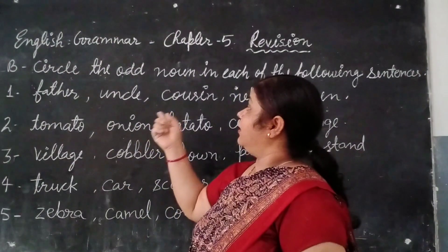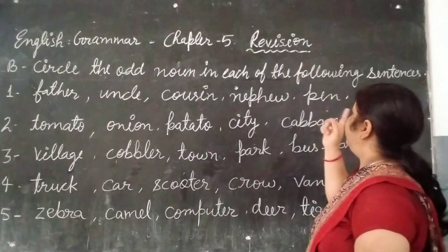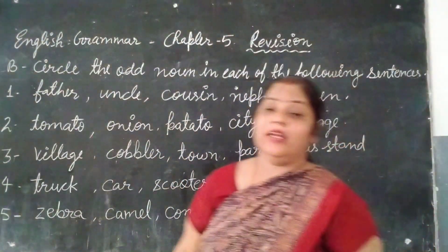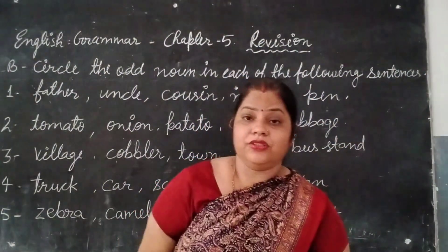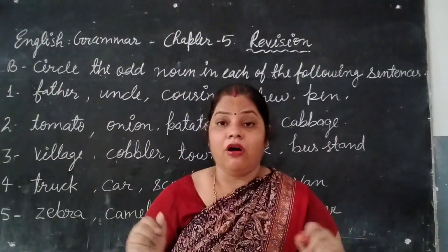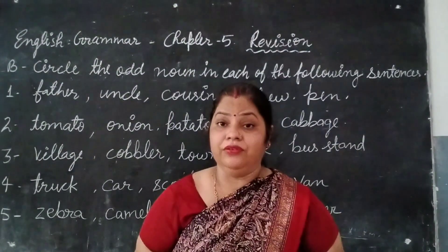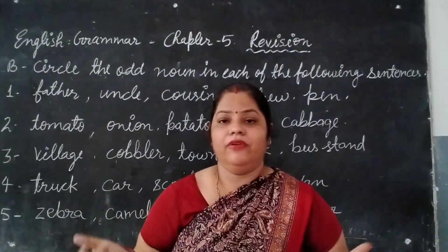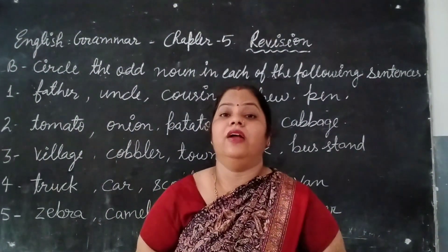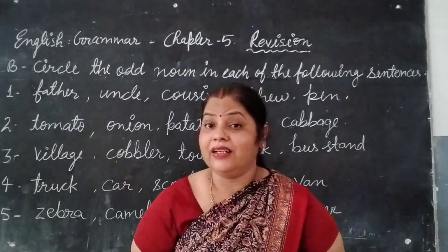Circle the odd noun in each of the following sentences. In each sentence, all the given words are nouns, but you have to find the odd one out — the one that is most different from the rest.